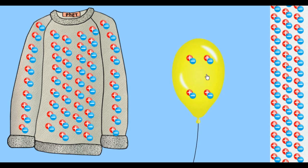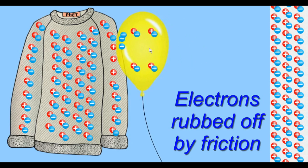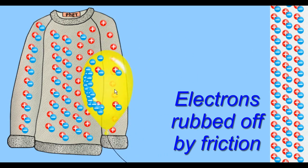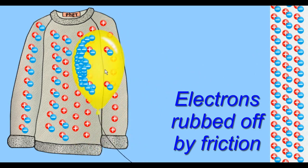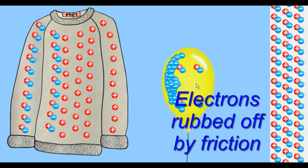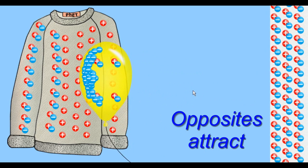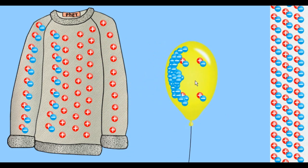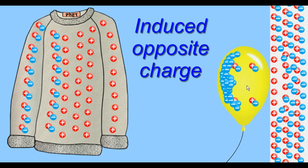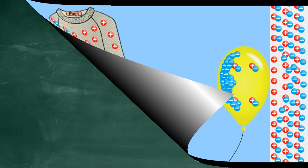This is perhaps better explained by looking at the charges involved. You can see the electrons rubbing onto the balloon — the sweater then becomes positive. Negative balloon, positive sweater: they're attracted to each other. But if you move the balloon towards the wall, it pushes the electrons away, leaving the positive protons behind. Opposite charges now attract, and the balloon sticks to the wall.